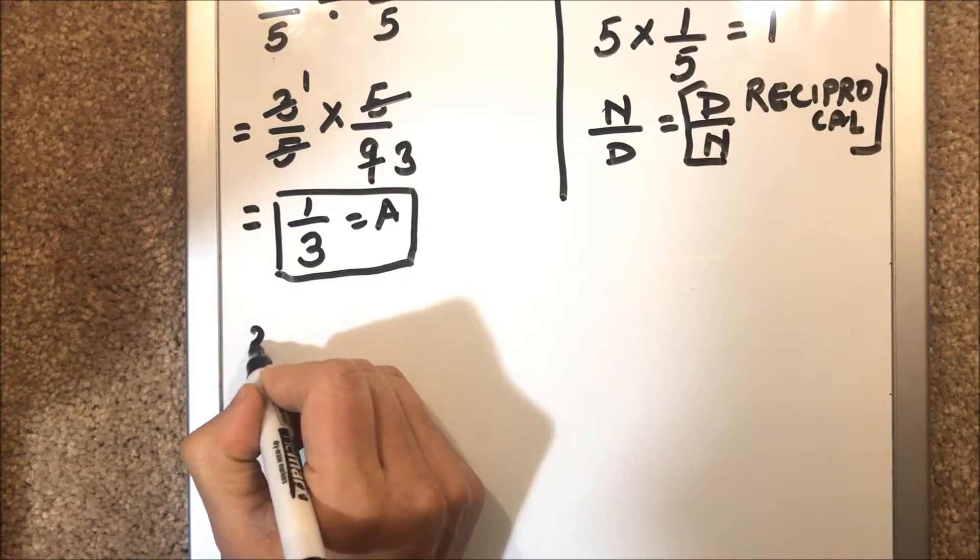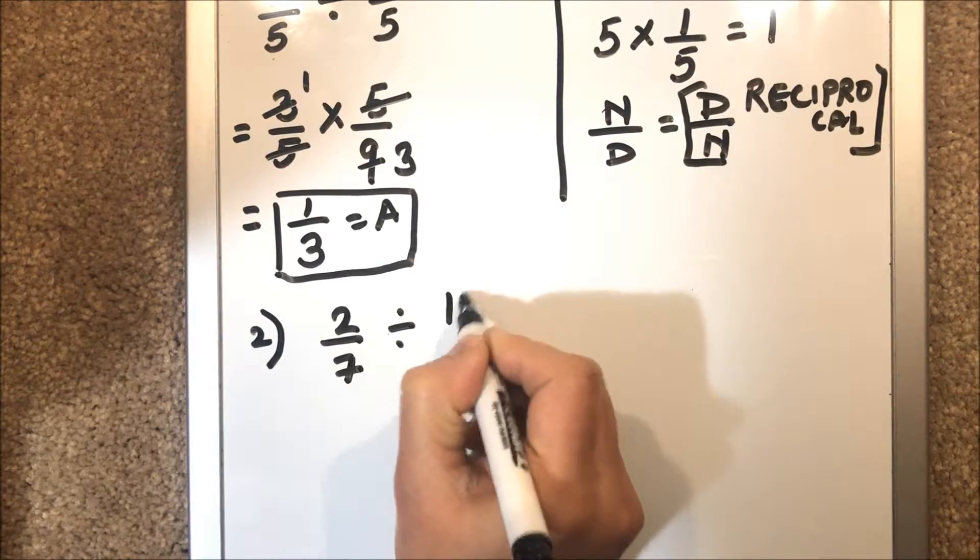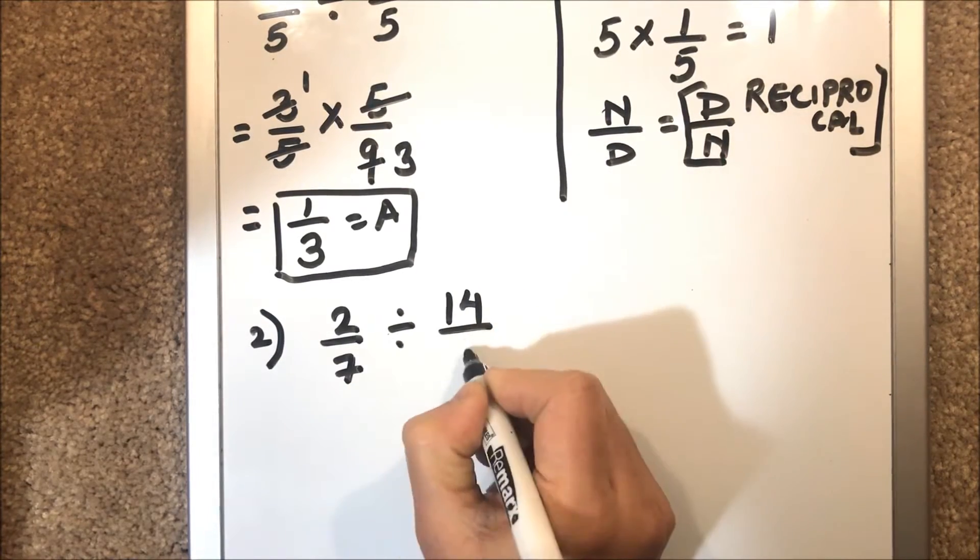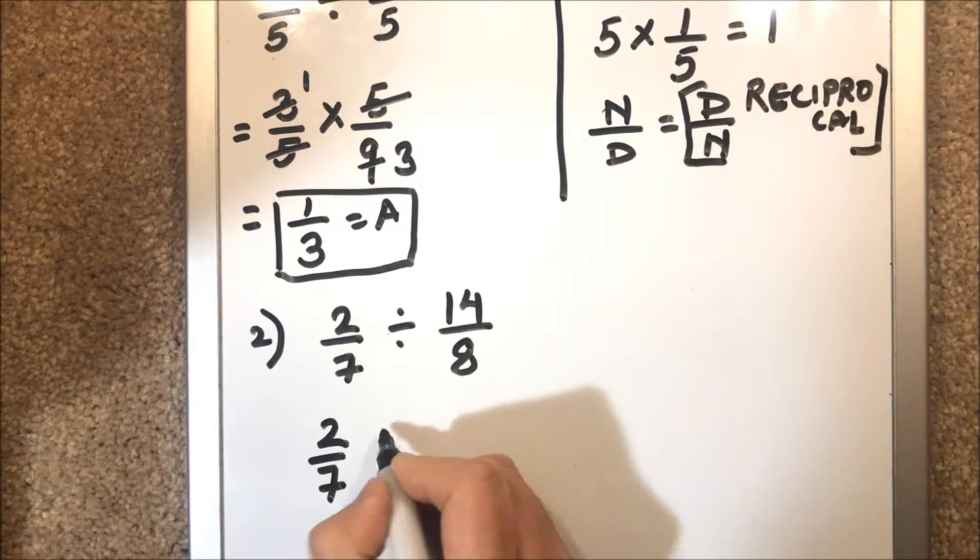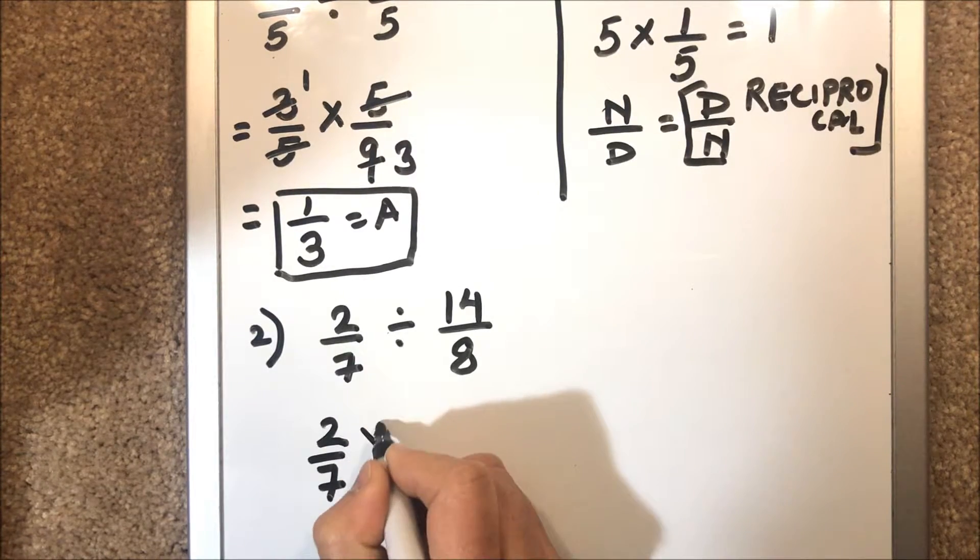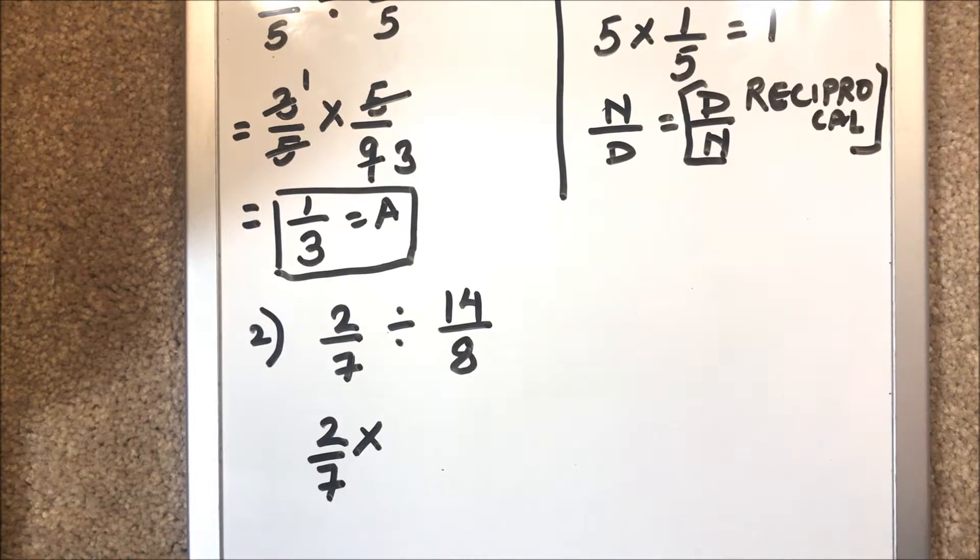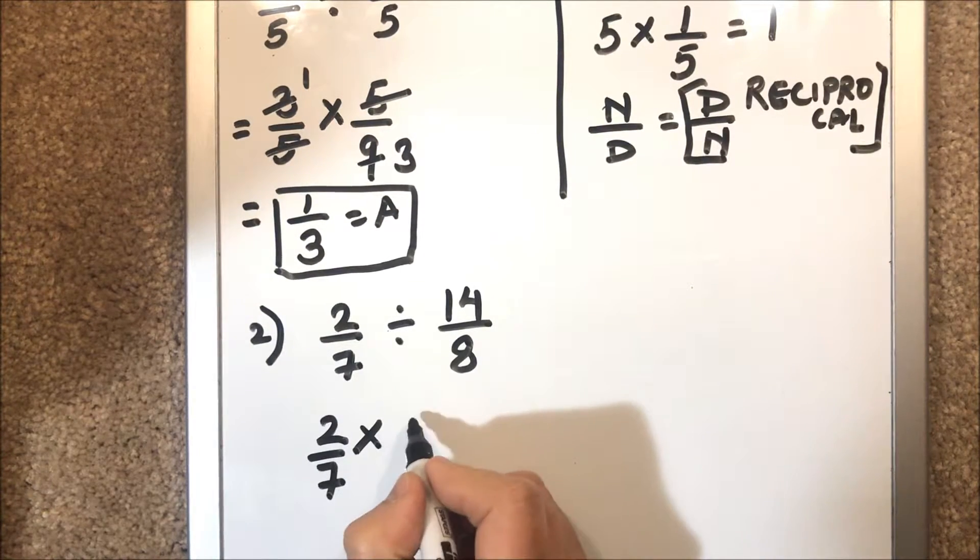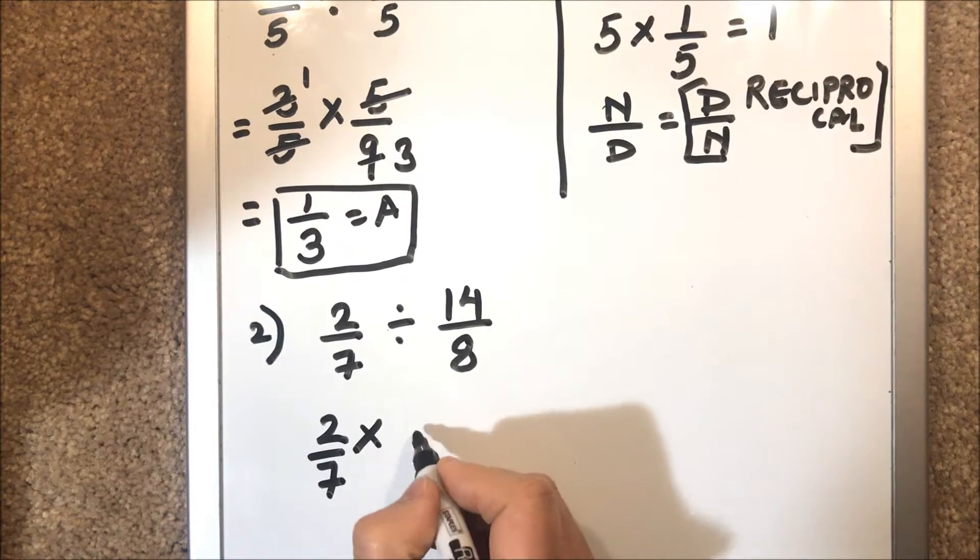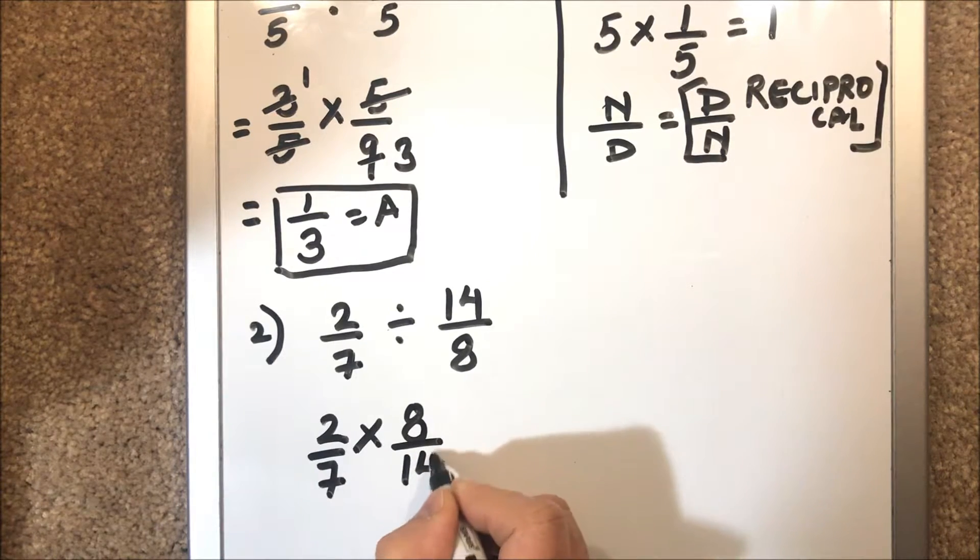Let's take 2 over 7 divided by 14 over 8. We'll write 2 over 7 as is and then multiply. We'll change the division sign to multiplication because dividing is basically multiplying with the reciprocal of a number. So we'll change it to a multiplication sign and then invert or take the reciprocal of the divisor, so 14 over 8 becomes 8 over 14.